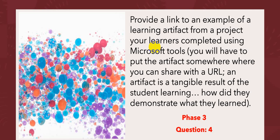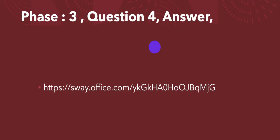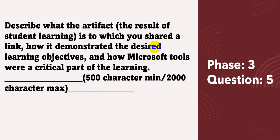Phase 3 question four: provide a link to an example of a learning artifact from a project your learners completed using Microsoft tools. Just share the URL — I have shared a URL of a Sway. You can use a Sway or a YouTube video link. Phase 3 question five: describe what the artifact is, how it demonstrates the desired learning objectives, and how Microsoft tools are a critical part of the learning.